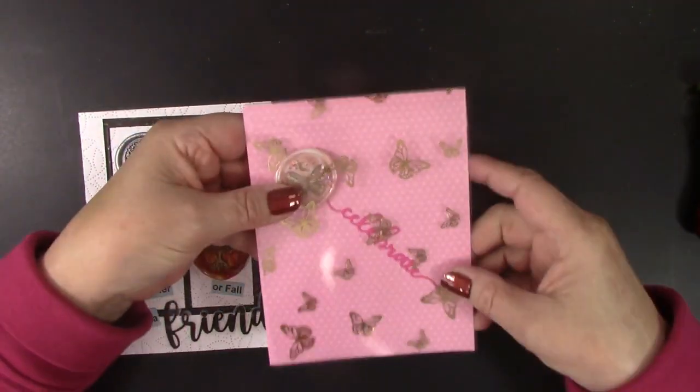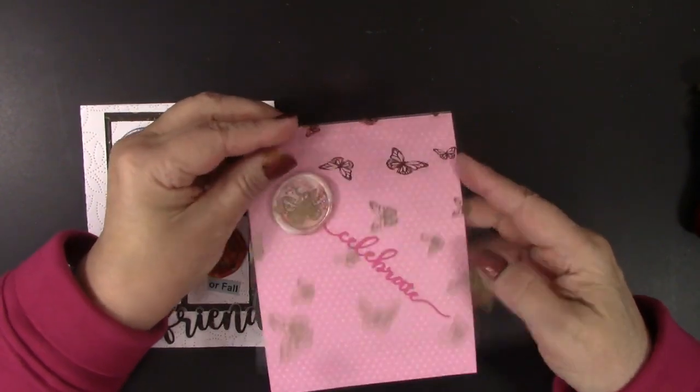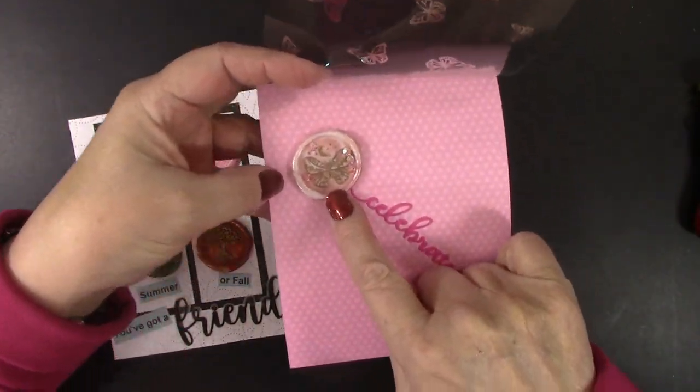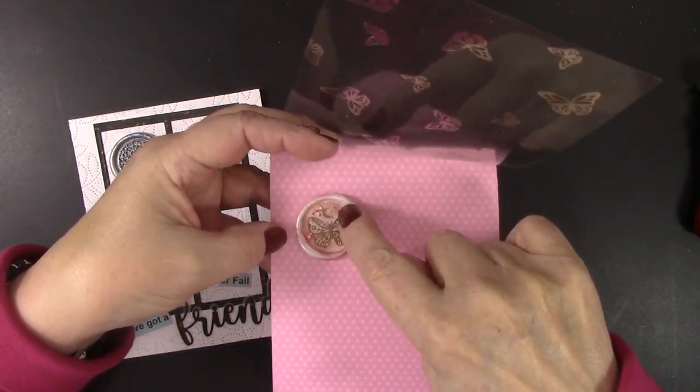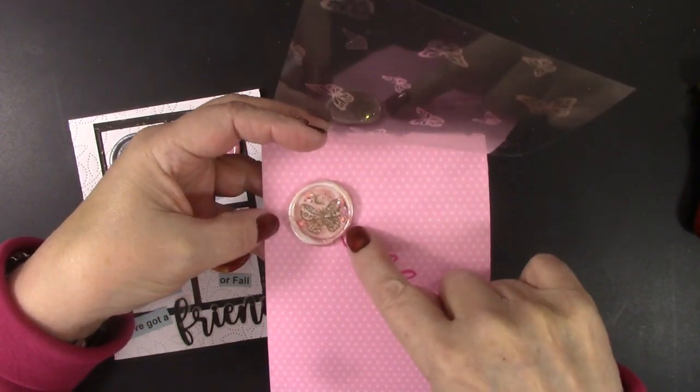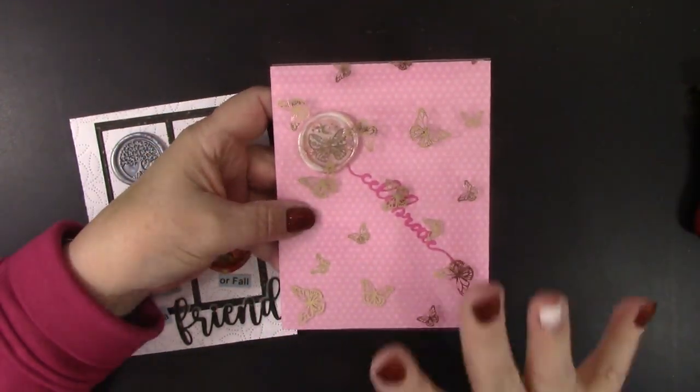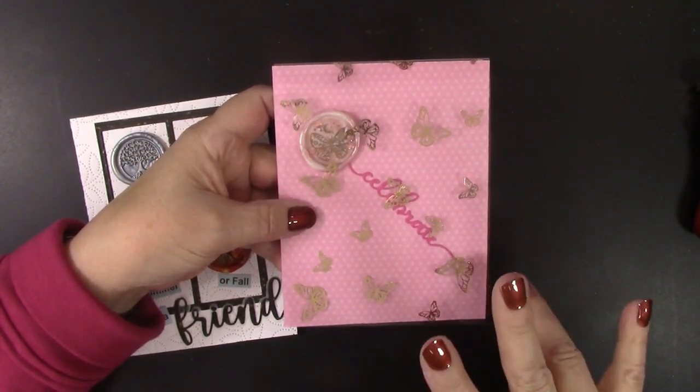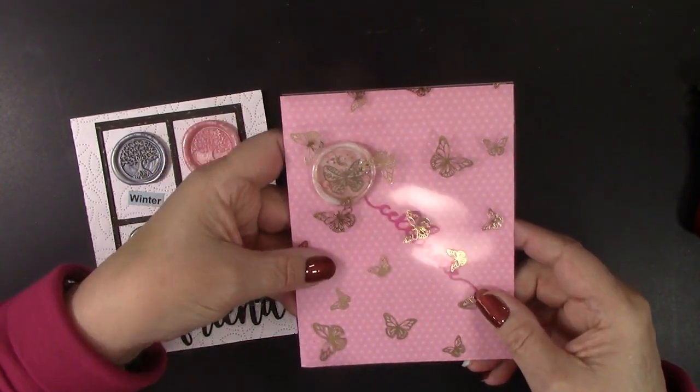This card was made with foiled acetate and a pretty wax seal stamp from Spellbinders. Can you see that beautiful butterfly with the moon? I added a couple gems there and I created this pretty card. Now, of course, all the details on all the projects that I show will be on my blog, and links to the blog post and products featured are in the description box.